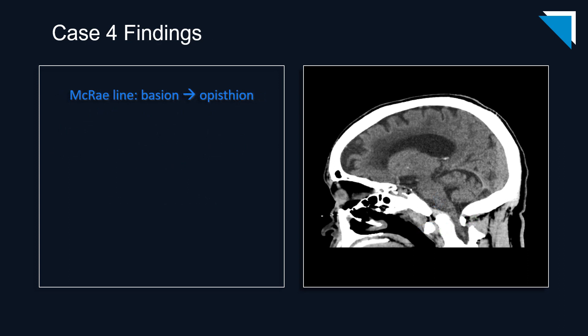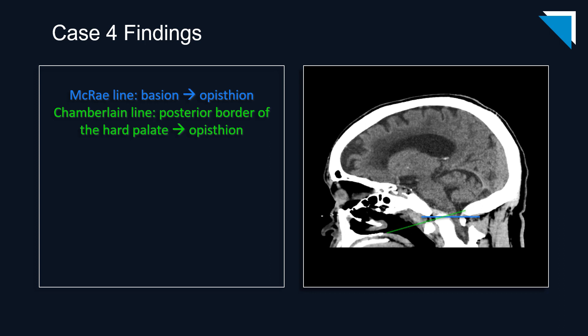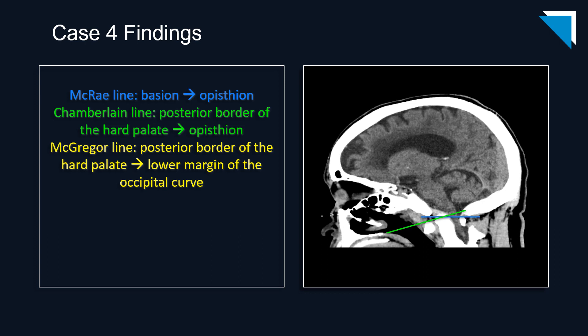There are some measurements you can deploy here, but take them all with a grain of salt — there's a lot of disagreement about whether these are accurate or useful. McRae's line measures a line along the undersurface of the foramen magnum; if the tip of the odontoid process projects above this line, that's diagnostic of basilar invagination. Chamberlain's line: the odontoid tip should not project above it by more than 3mm. McGregor's line: no more than 5mm. Use your judgment and most importantly look for mass effect and narrowing of the foramen magnum.